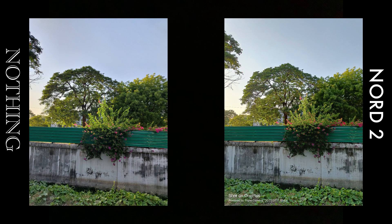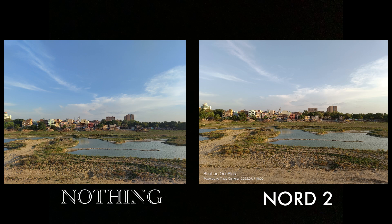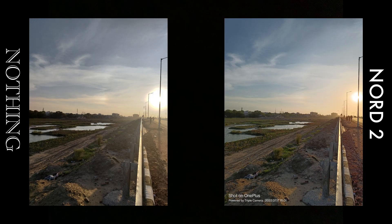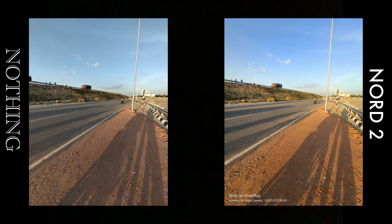In this photo I'll go with Nothing Phone 1 for better white balance and slightly more saturated skies. When sunlight enters the scene, OnePlus Nord 2 wins because of better exposure and boosted colors — Nothing Phone 1 tends to dull the grass, ground, and skies. In another shot, the only difference is tone: OnePlus Nord 2 has a warmer tone while Nothing Phone 1 is neutral and closer to reality, so it's personal preference — but I'd pick Nothing Phone 1 here.